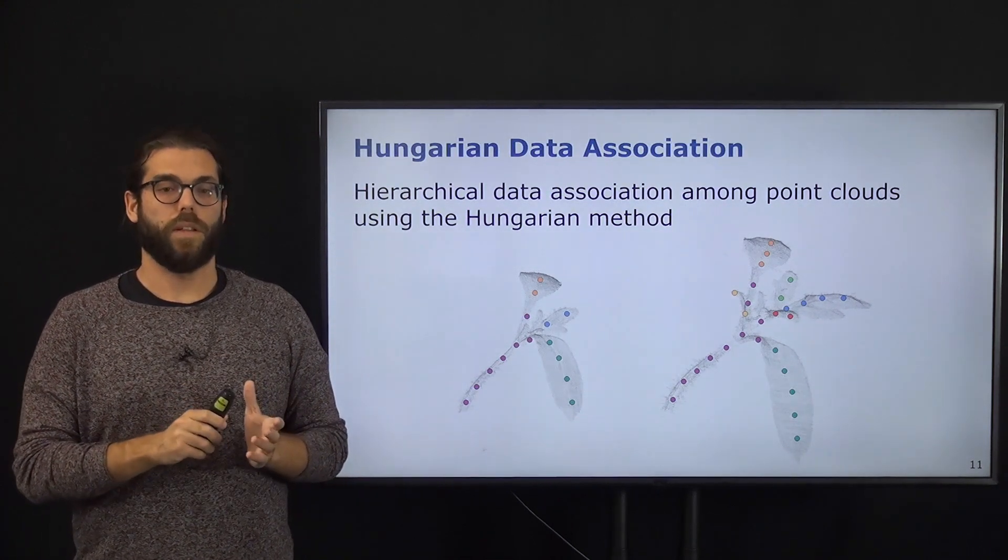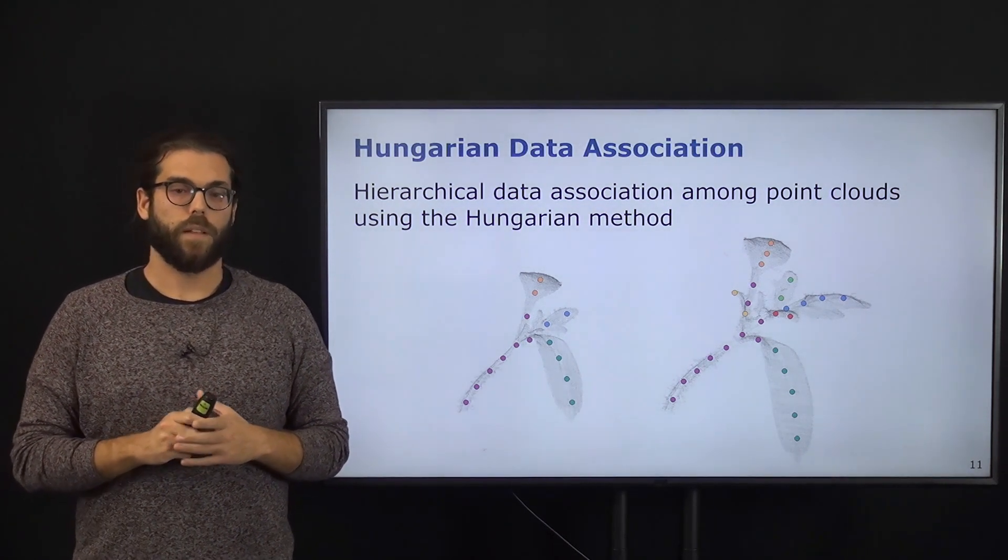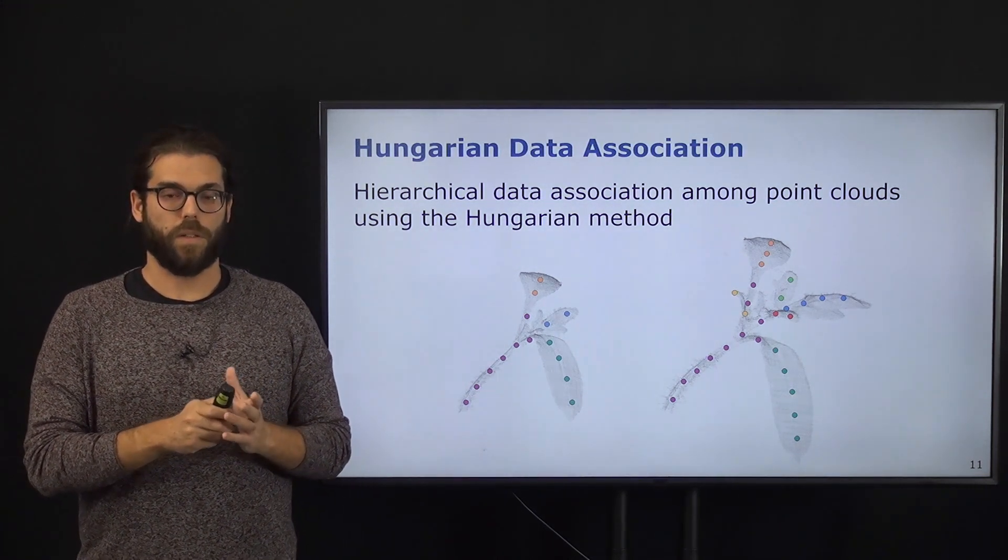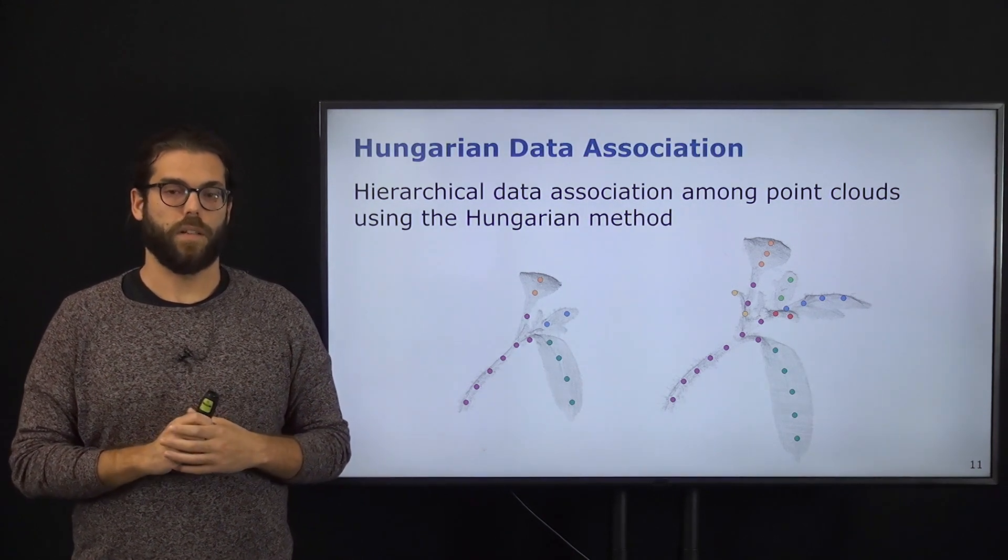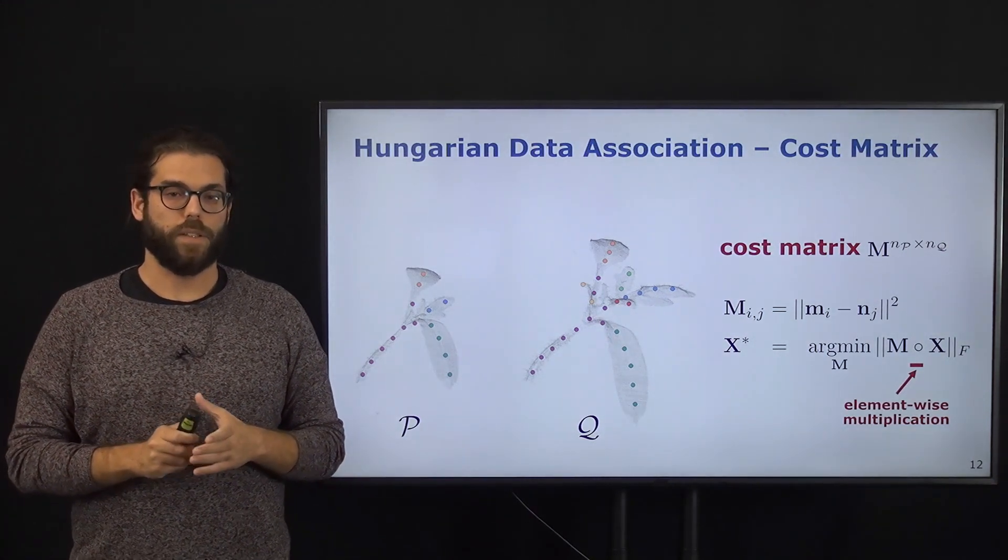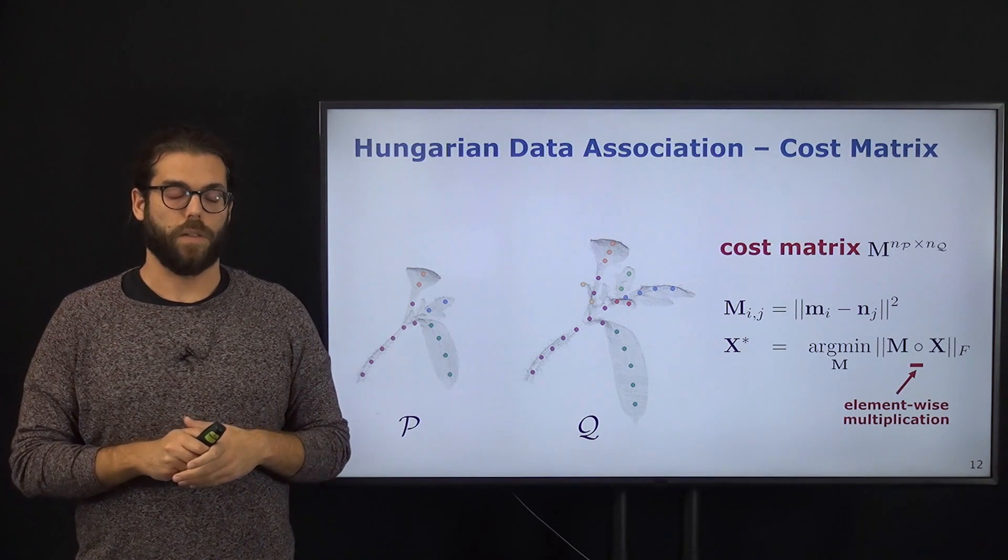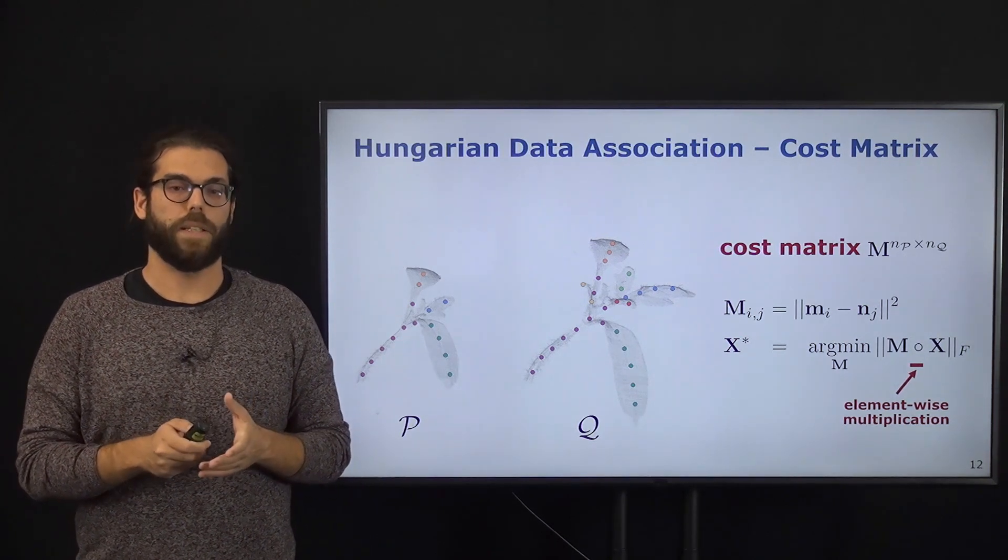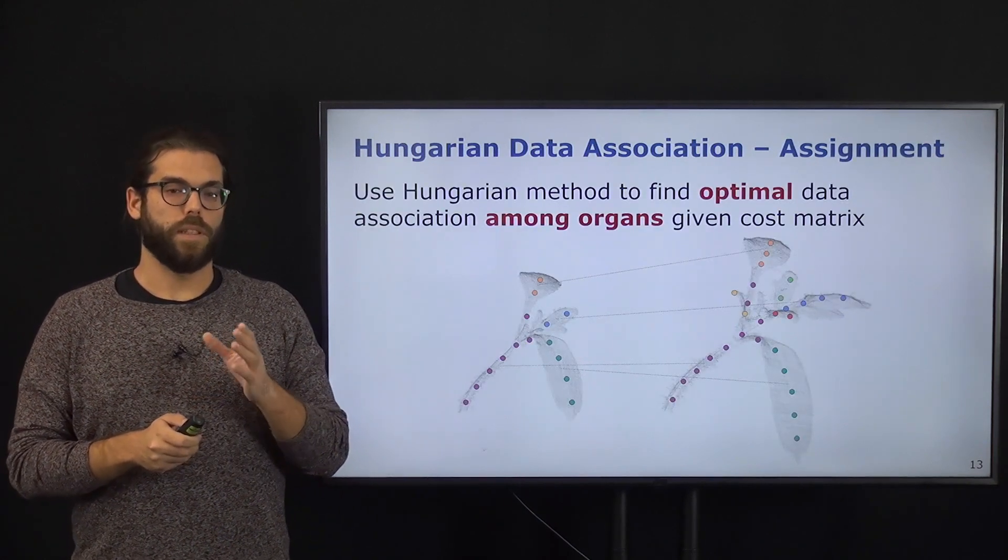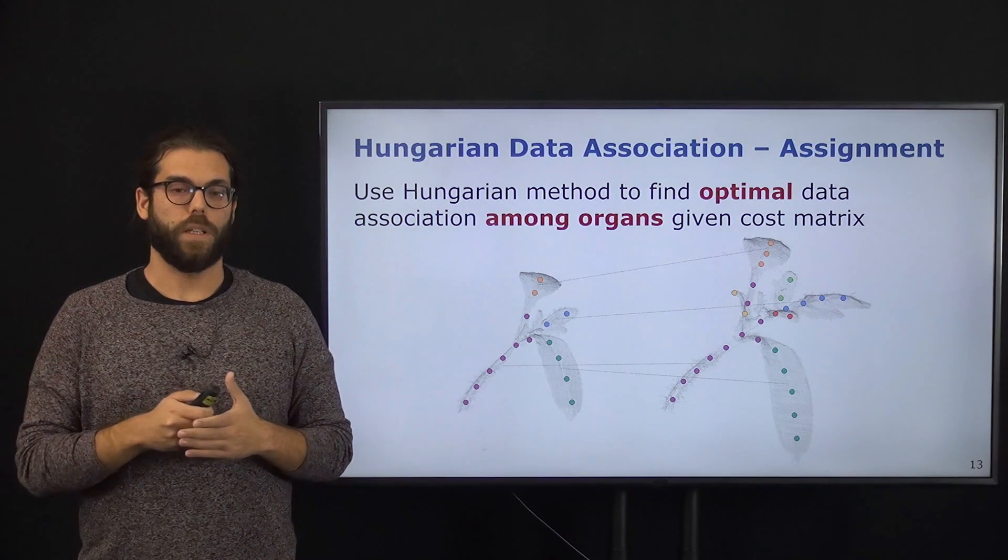Once we have done our skeletonization for all the point clouds in our time series, we are able to start our data association. The first thing we do is find the correspondences between one organ in the first point cloud and one organ in the second point cloud. To do this, we define a cost matrix in which each element ij is the Euclidean distance between one node in point cloud P and one node in point cloud Q. Based on this cost matrix, we can find the optimal solution with the Hungarian method.